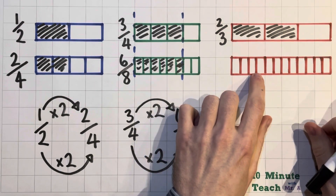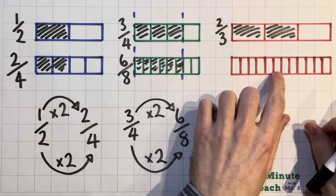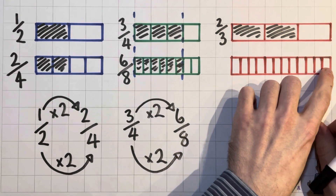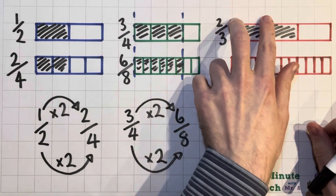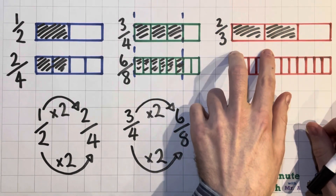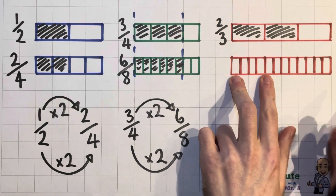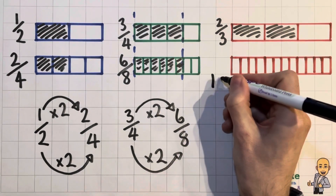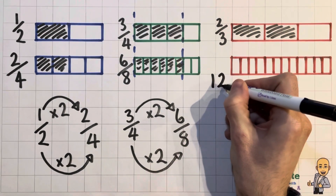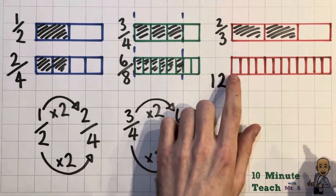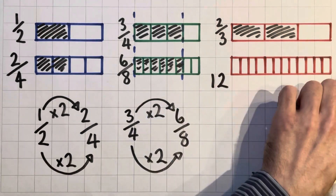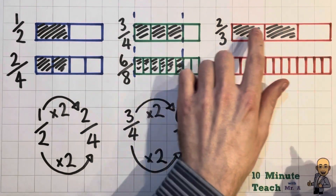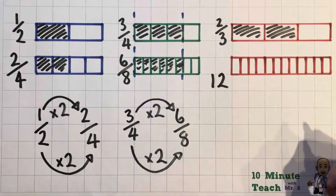Counting up the pieces — one through twelve — confirms there are twelve. So each third now has four pieces, making my new denominator twelve. It's much easier to draw these kinds of bars out on squared paper because you get real accuracy. Each piece must be the same size for the fractions to be equal or equivalent.